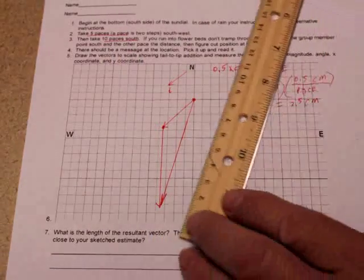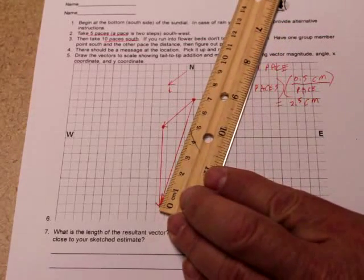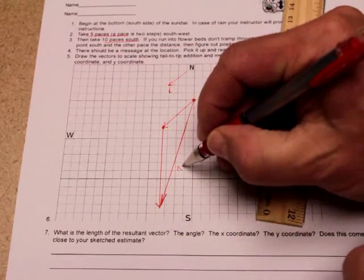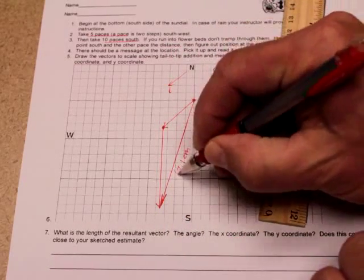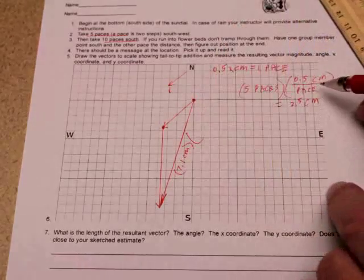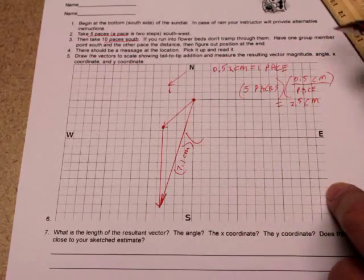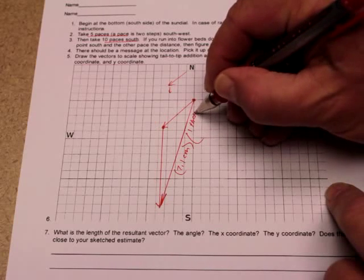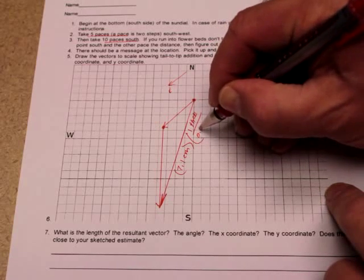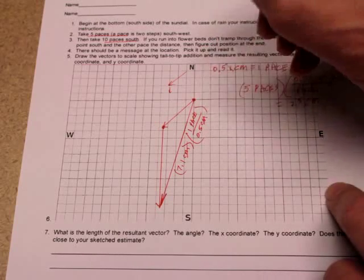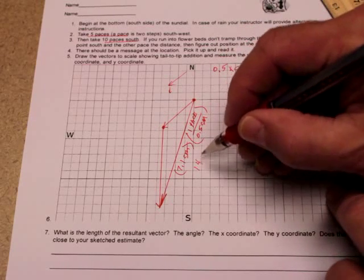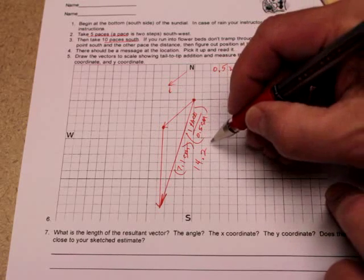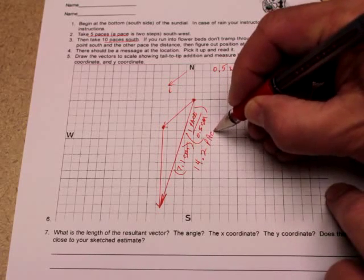How long is our resultant? I get 7.1 centimeters times 1 pace is half a centimeter. 1 pace per half a centimeter. Centimeters cancel out. So I'll get 14.2 paces long.